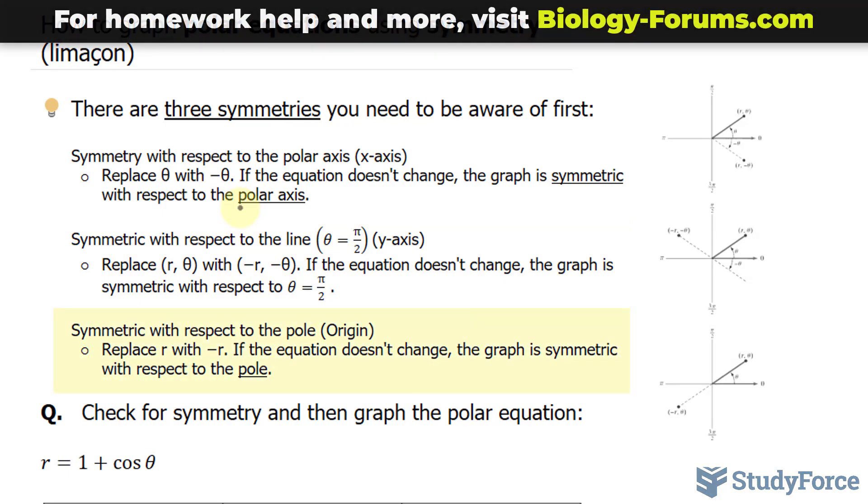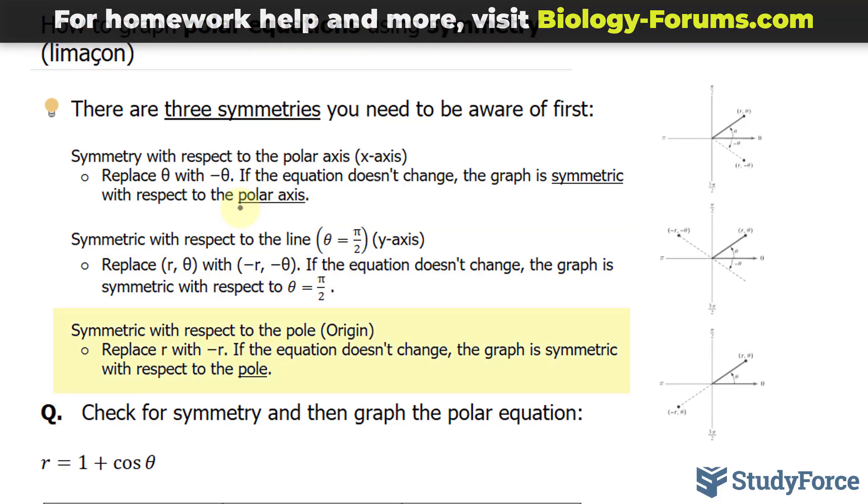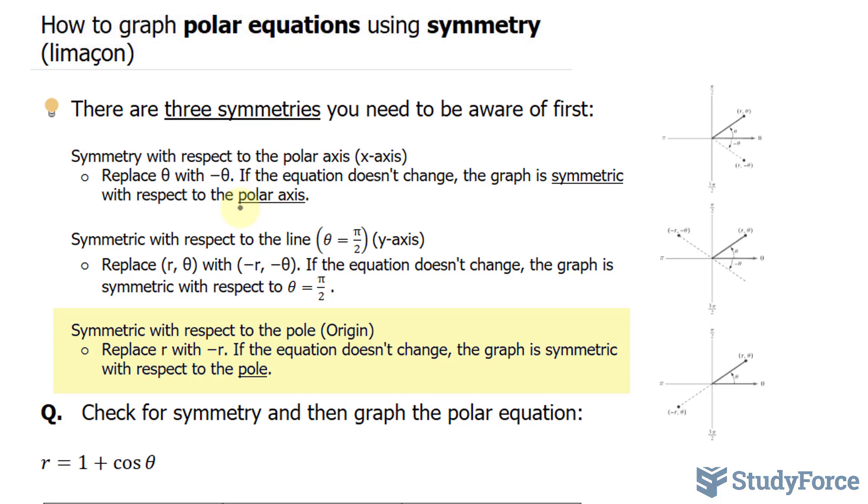And finally, we have symmetry with respect to the pole, in other words, a combination of the polar and vertical axis. For this, you replace r with negative r, and if the equation doesn't change, the graph is symmetrical with respect to the pole.